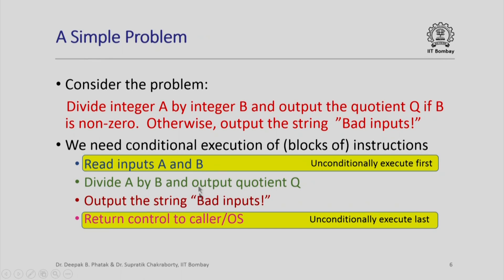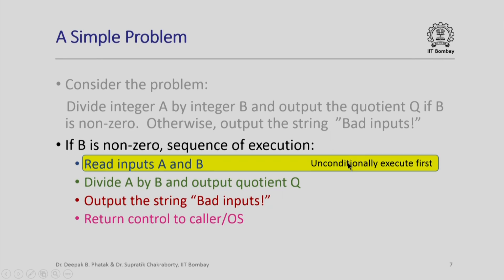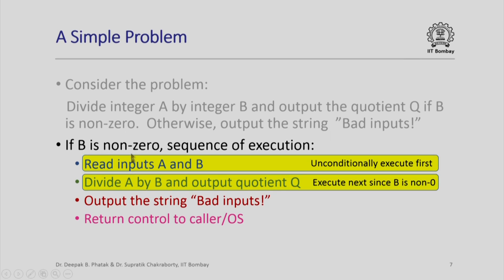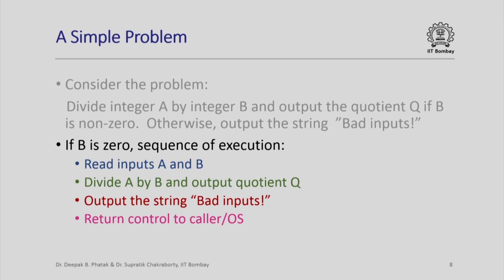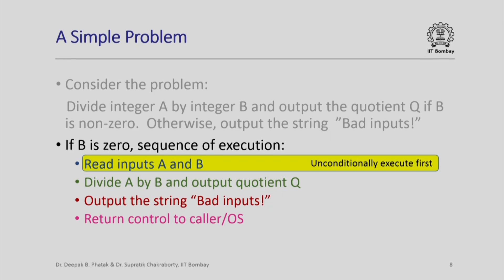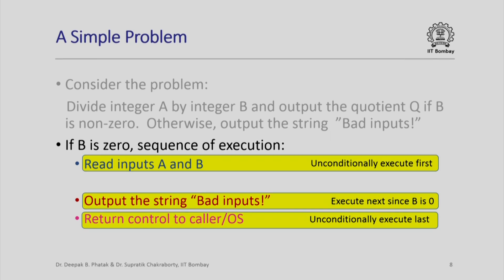There are some instructions that must be unconditionally executed, and others that must be conditionally executed depending on the value of b. If b is non-zero, the sequence is: read inputs a and b, then divide a by b and output the quotient q, then return control to the operating system. On the other hand, if b is 0, the sequence is: unconditionally read inputs a and b, then output "bad inputs" instead of dividing, then return control to the operating system.